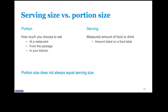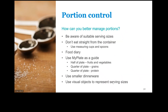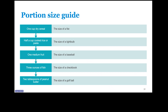What can we do to better manage our portions? We can be aware of suitable serving sizes, don't eat straight from the container, use measuring cups or spoons, use a food diary, and use MyPlate as a guide — that's half a plate of fruits and vegetables, a quarter plate of grains, and the last quarter of protein. Use smaller dinnerware and visual objects to represent serving sizes. For example: one cup of dry cereal is the size of a fist, half a cup of cooked rice or pasta is the size of a light bulb, one medium fruit is the size of a baseball, three ounces of fish is the size of a checkbook, and two tablespoons of peanut butter is about the size of a golf ball.